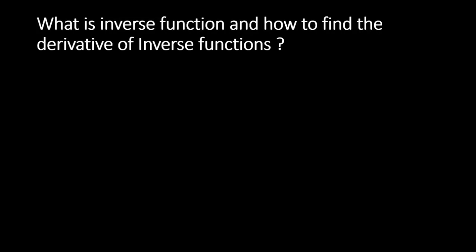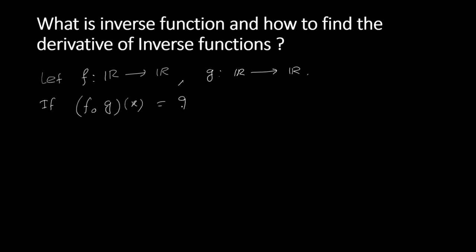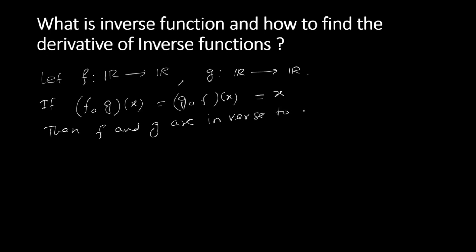We will look at inverse functions and how to find the derivative of an inverse function. If f is a function from the set of real numbers to real numbers, and g is another such function, then if f∘g(x) = g∘f(x) = x, then f and g are inverse to each other.